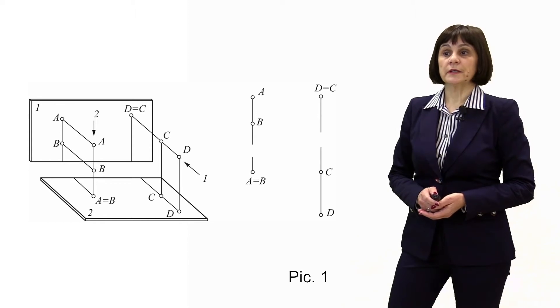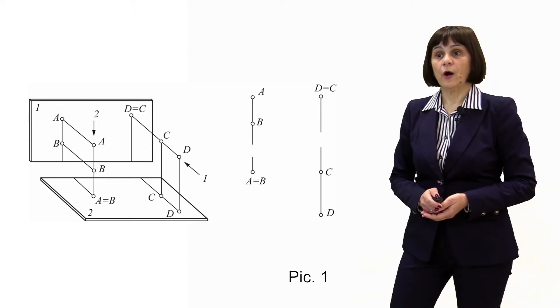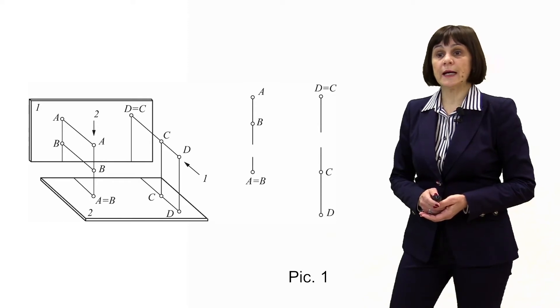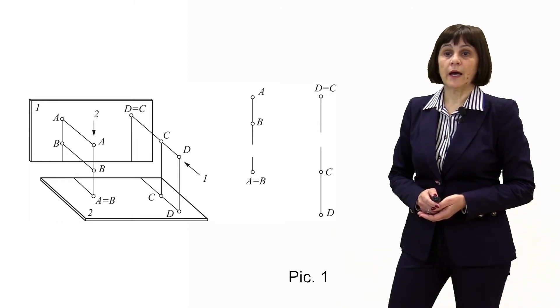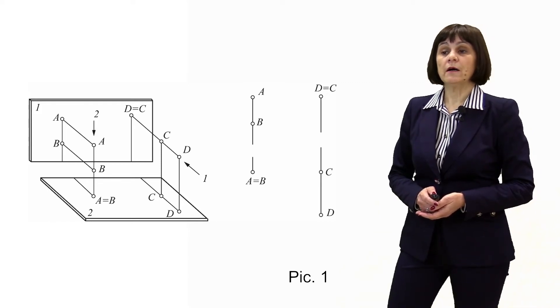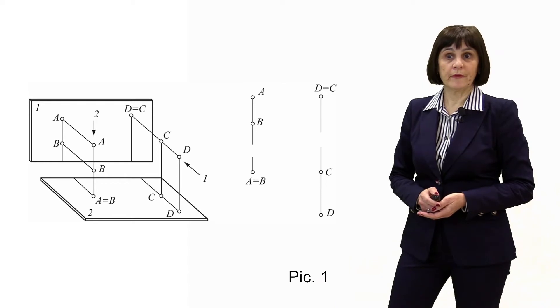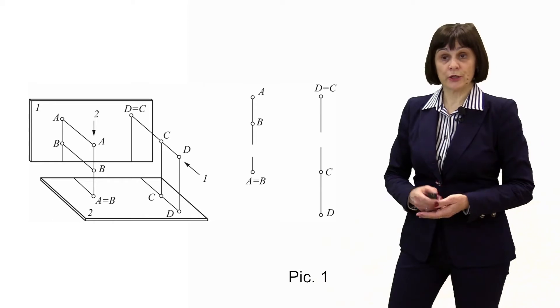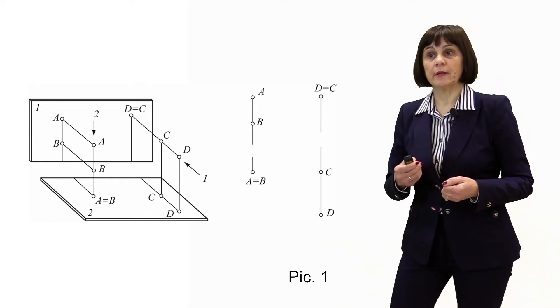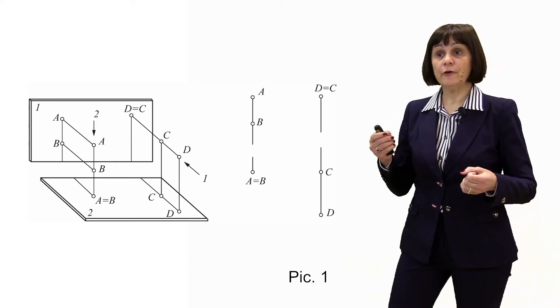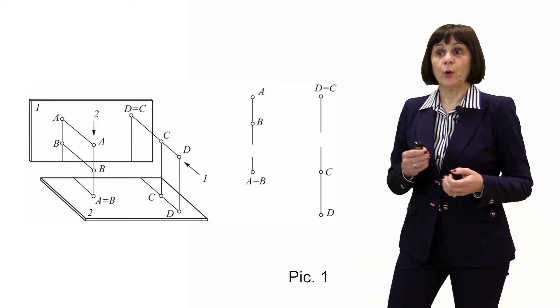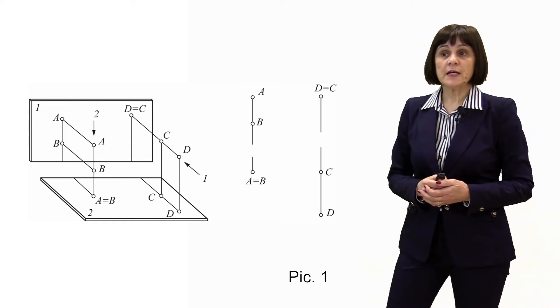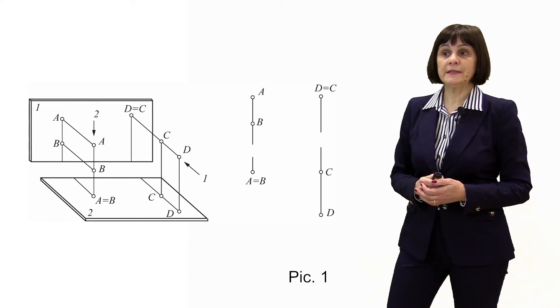In orthogonal projection, the direction of the rays of vision coincides with the projecting lines. If two points lie on the same line of sight, then one of them is covered by the other. In this case, the point located closer to the observer will be visible, and the point located further from the observer will be invisible for us. Such points are called competing points.